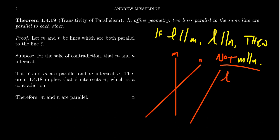With our numbering system, that was theorem 14.18. That then gives us that L and N must intersect, which contradicts the assumption that L is parallel to N. So if we didn't have transitivity of parallelism, we would contradict Proclus Lemma, which has already been established. Therefore M and N have to be parallel to each other.